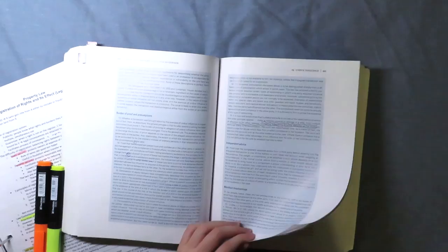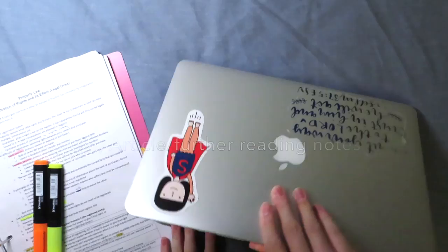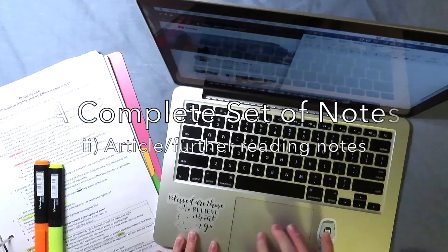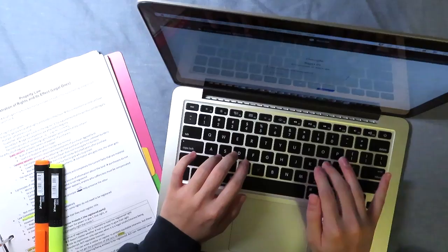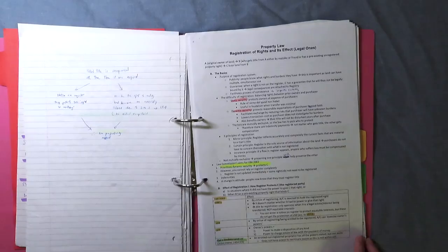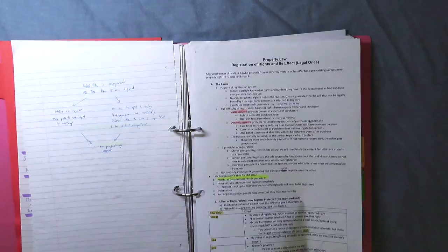Once you finish your textbook notes, you'll be at my least favorite stage of studying, which is reading articles or further reading. I really don't like this part, it's so boring to me, but you still have to do it because this is how you get a first. So basically what you want to do is read through all of your articles, highlight them when appropriate, and just type out your notes on the articles. The most important thing you want to get from your articles is really just what the academic thinks about the topic or whether he agrees or disagrees with something.